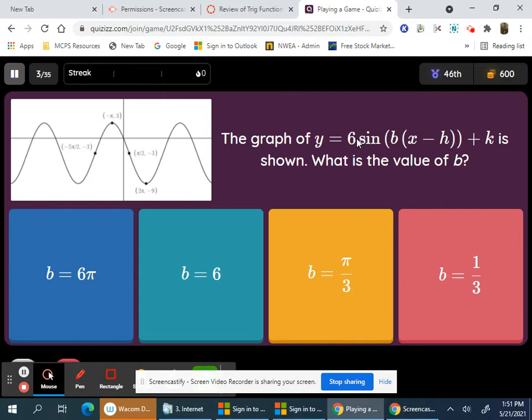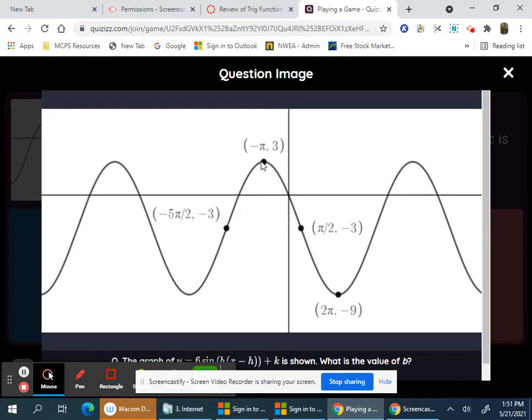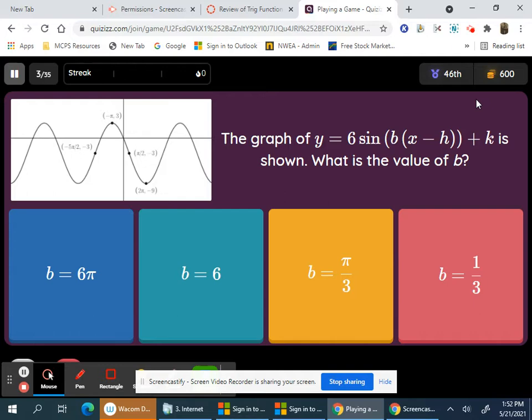Now the graph of y equals 6 sine bx minus h plus k is shown. What's the value of b? You want to look at this graph here and find out what the period is. If this is negative pi over 3, this would be positive pi over 3. Or if I go from half of a period, from negative 5 pi over 2 to pi over 2, that's 3 pi. This whole period would be 6 pi. So 2 pi over 6 pi is 1 third.